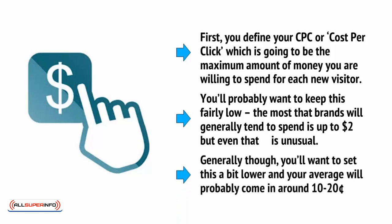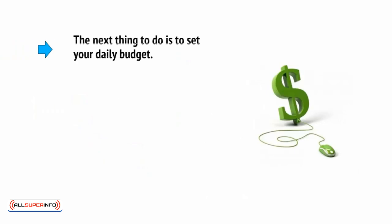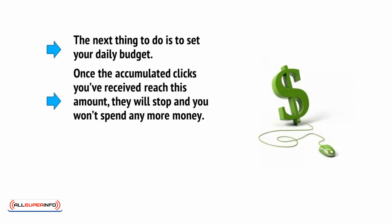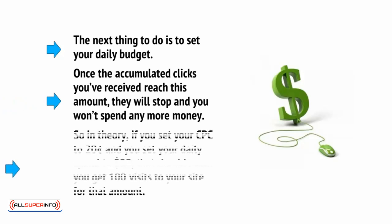Generally, you'll want to set this a bit lower, and your average will probably come in at around $0.10 to $0.20. The next thing to do is to set your daily budget. Once the accumulated clicks you've received reach this amount, they'll stop and you won't spend any more money.